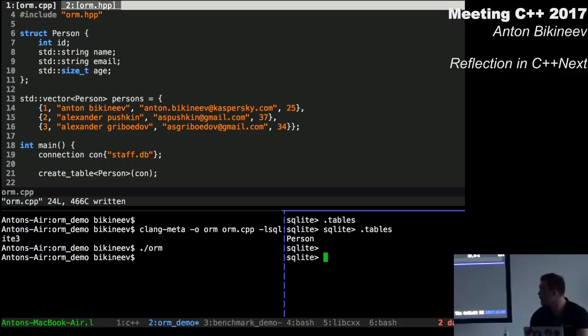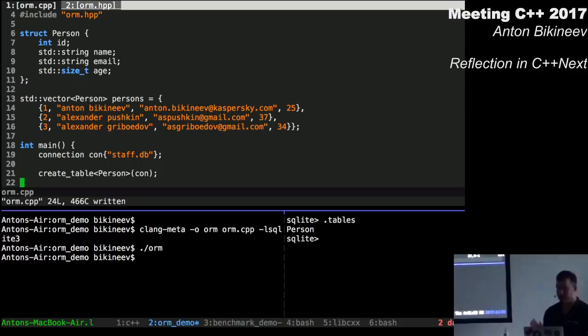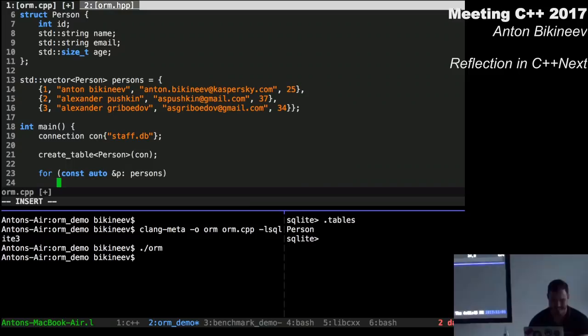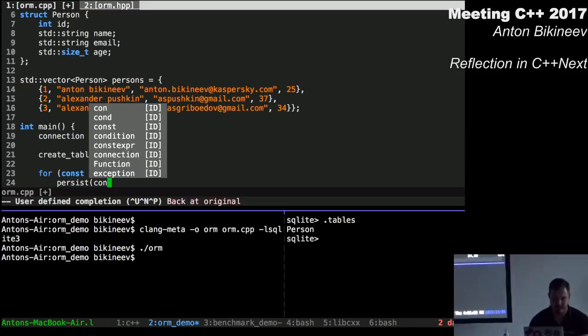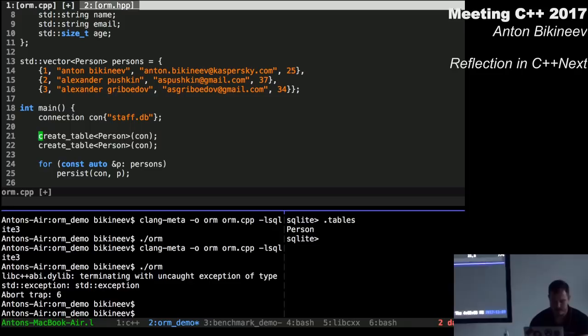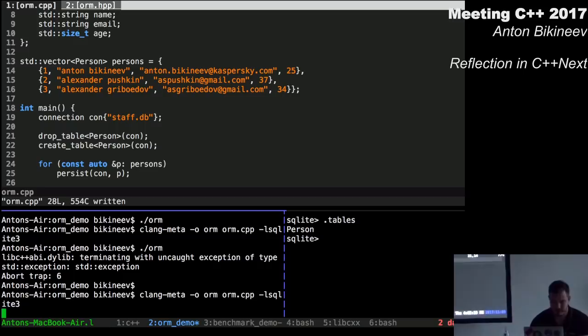For that, let's call the function create table and pass struct person as a template argument to it. Compile this program. And clang meta is just an alias to clang with some small option. And let's see if our table has been created. Here it is. Now, let's try to add some rows into the table.